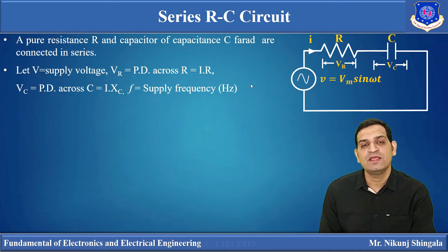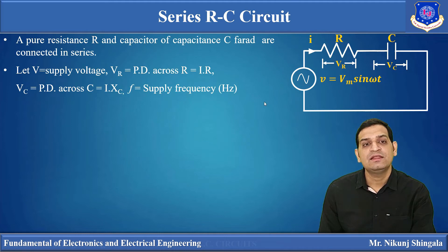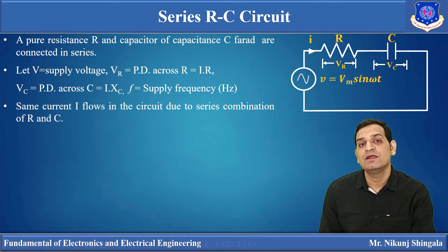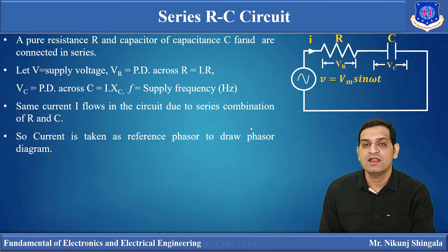The supply frequency F is measured in Hertz. We know omega (ω) can be represented by 2πF, where ω is the angular frequency. Since both the resistor and capacitor are connected in series, the same current will flow through both elements because there is only one path for the flow of current. As current is common for both resistor and capacitor, we will take current as a reference quantity when drawing the phasor diagram.